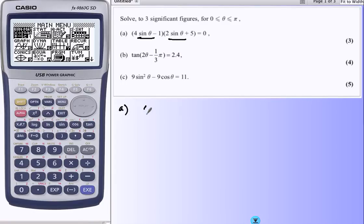So for part A, either that bracket is zero or the other bracket is zero. We'll get sinθ could be 1/4, or sinθ could be -5/2. Now, this is a problem, straight away.